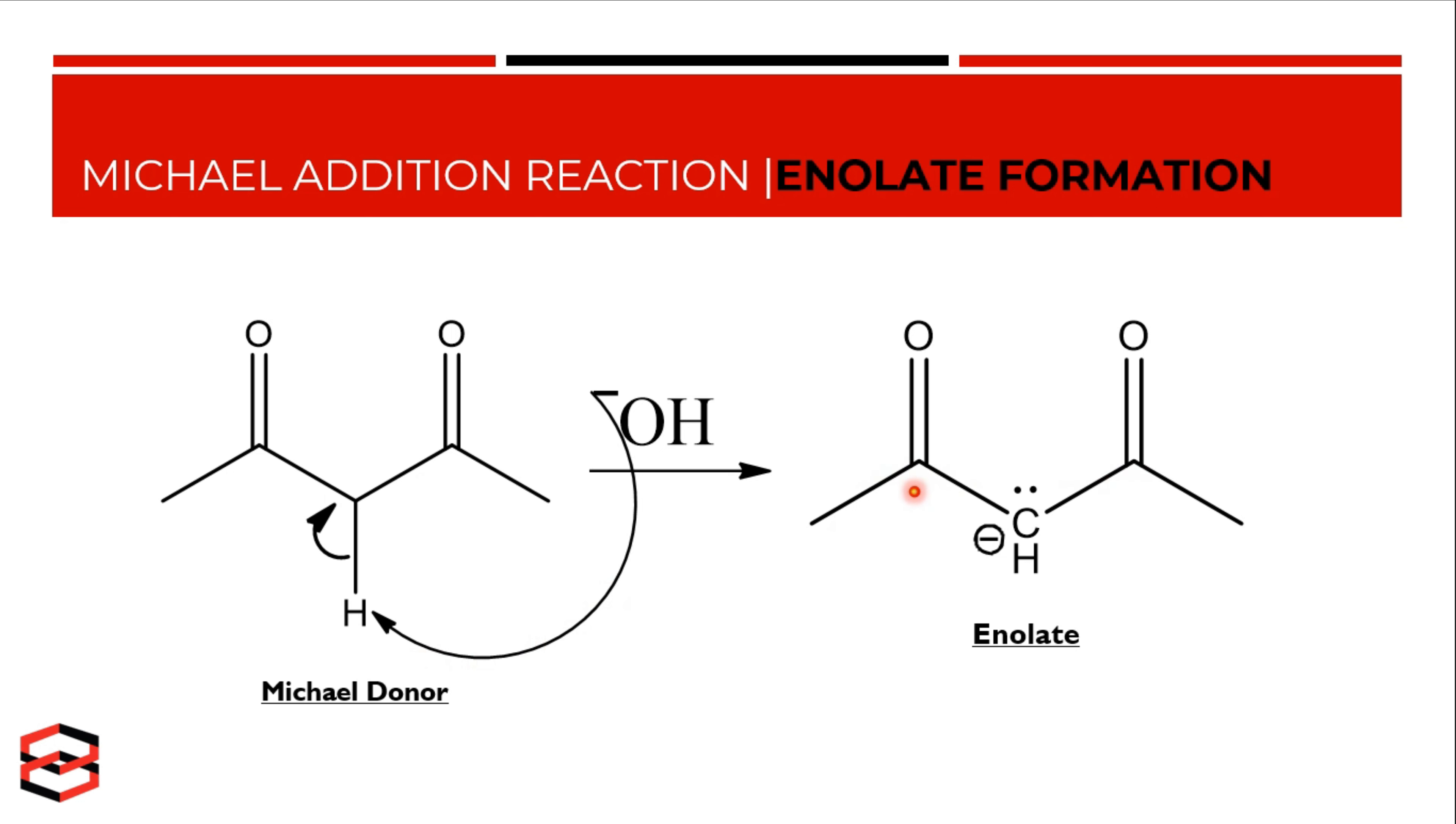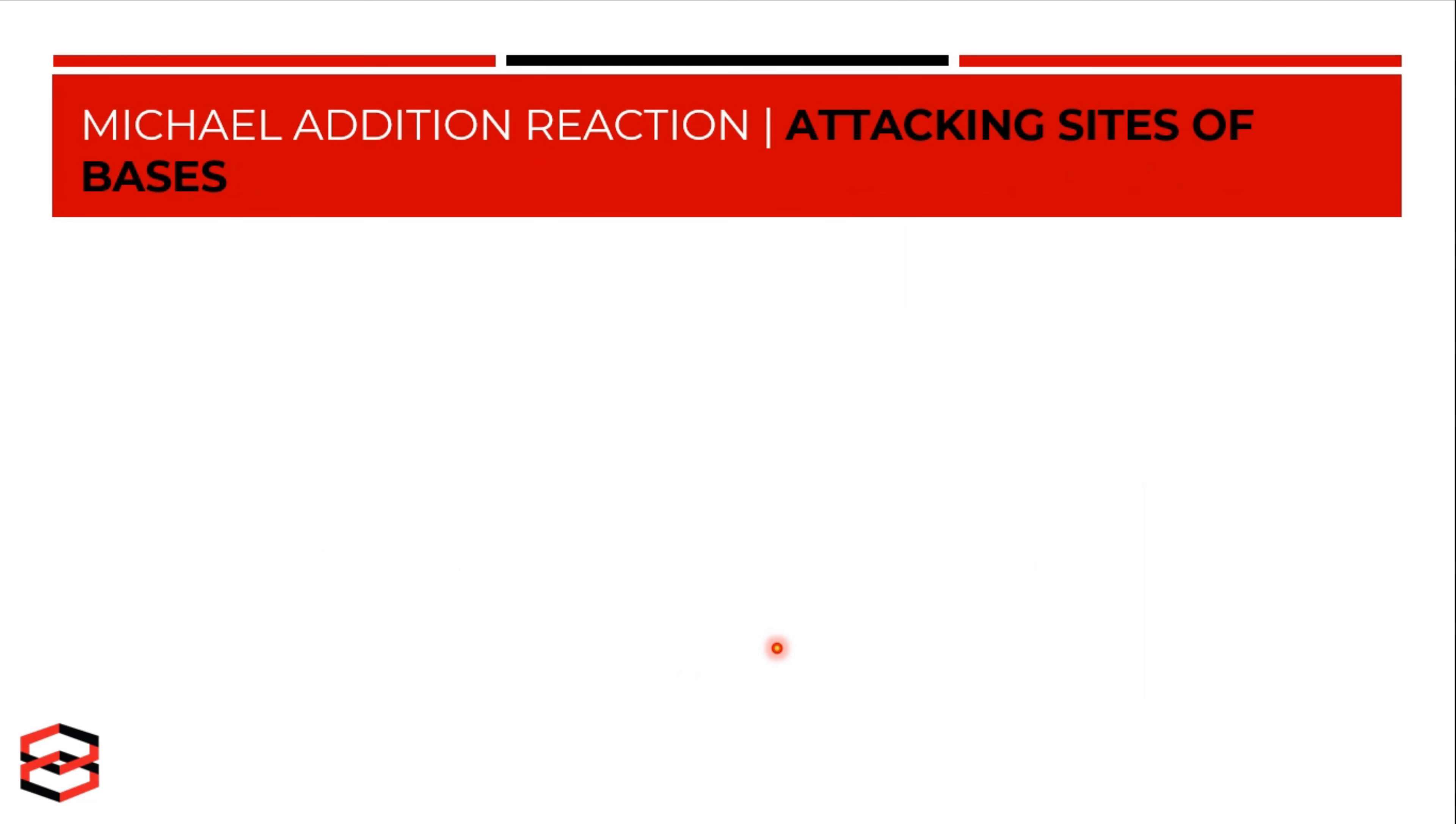This enolate is stabilized by two carbonyl groups, and this is going to react with an alpha-beta unsaturated aldehyde. Here is the alpha carbon and here is the beta carbon.